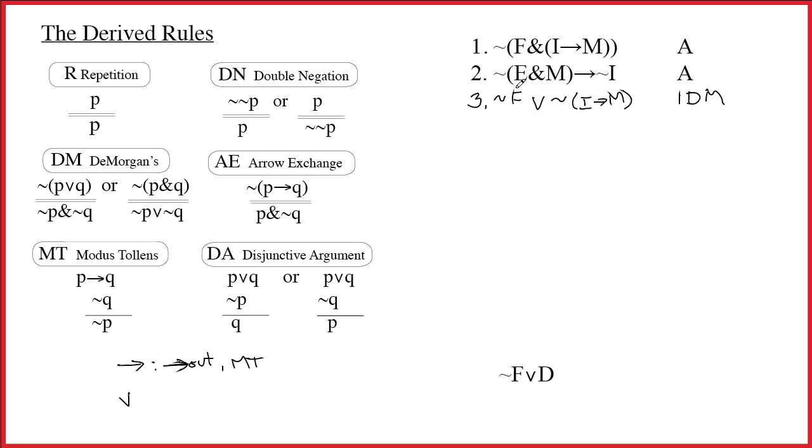To do arrow out on line 2, clearly we would need to have tilde E and M. No, we don't have it. What would we need to do modus tollens? For modus tollens, you need to have the negation of the Q part. Just looking at line 2, we know that what we're supposed to go look for is tilde tilde I. Because it's the Q part plus one more tilde. And so I take a look. Do I have tilde tilde I? No, clearly I don't. So I can't work on line 2 right now, but I just did exactly the thinking that's important.